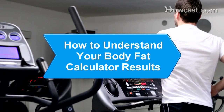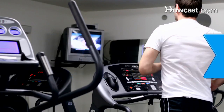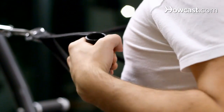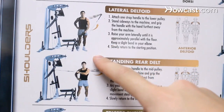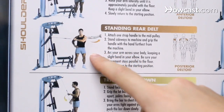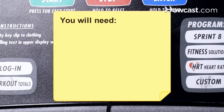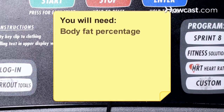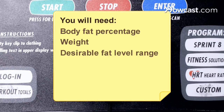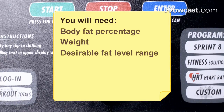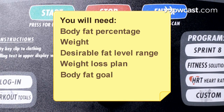How to Understand Your Body Fat Calculator Results. A body fat calculator estimates the amount of fat you are carrying based on measurements at various parts of your body. You will need: body fat percentage, weight, desirable fat level range, a weight loss plan, and a body fat goal.